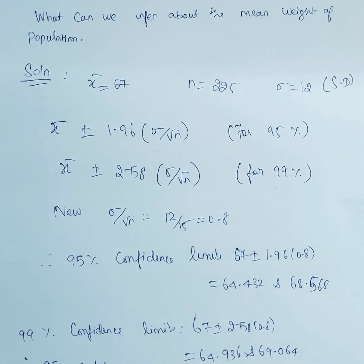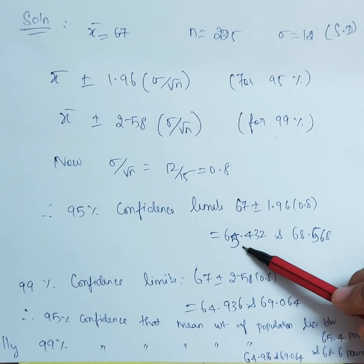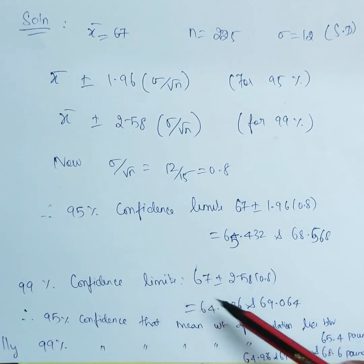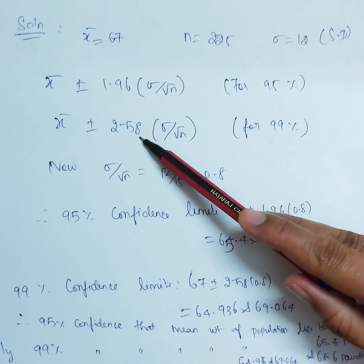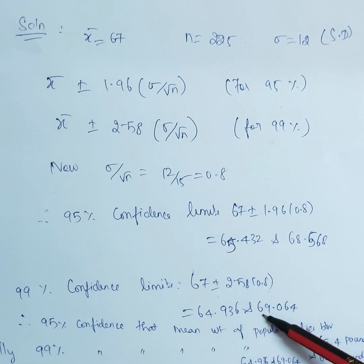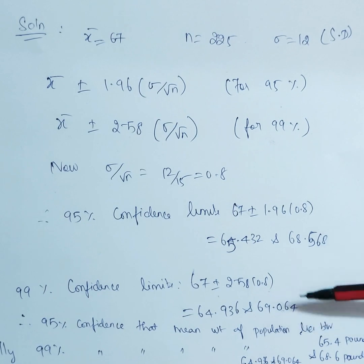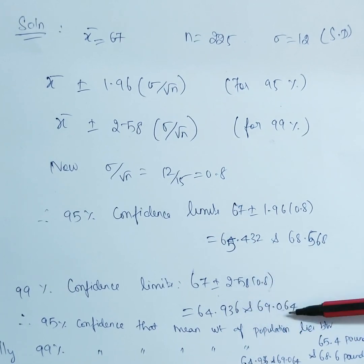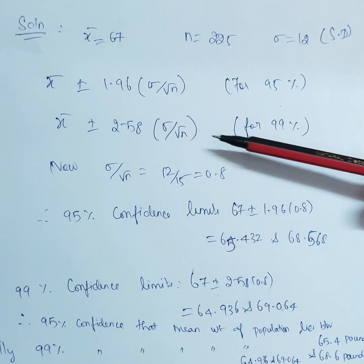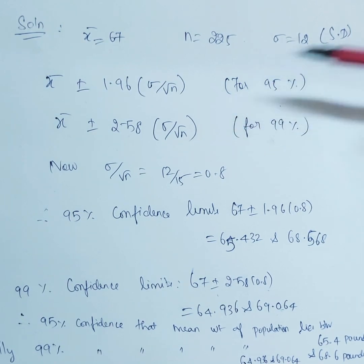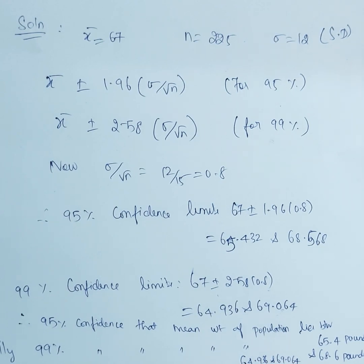There is a small correction in the calculation: the 95 percent confidence interval gives 65.432 to 68.568. For 99 percent confidence: 67 plus or minus 2.58 times 0.8, simplifying to 64.936 and 69.064. Therefore at 99 percent confidence, the mean weight of the population lies between 64.936 and 69.064 pounds. These problems are variations of the z equals x minus mu by sigma formula. We will see more problems in the next video.